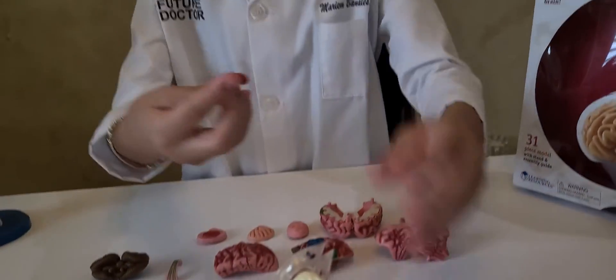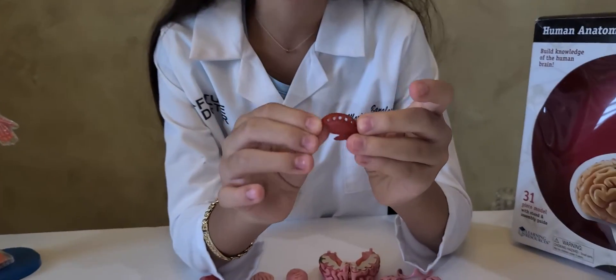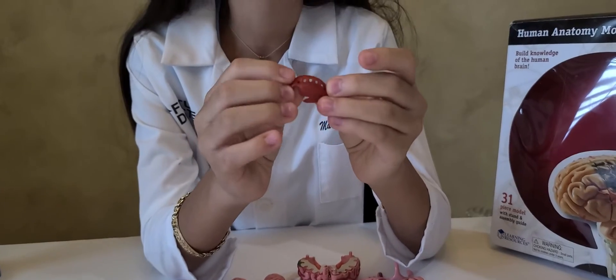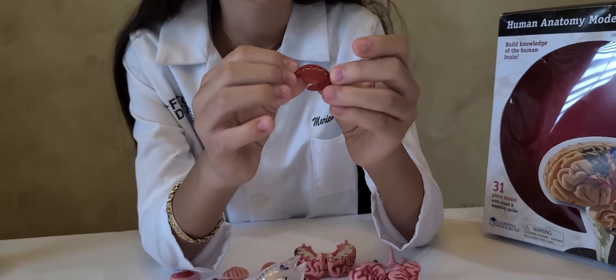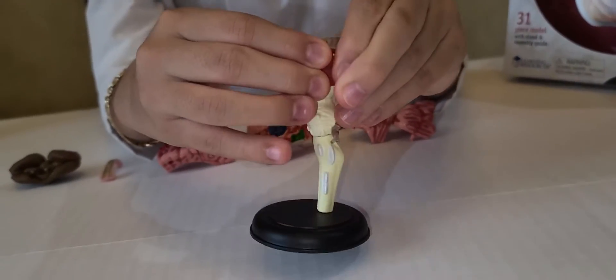The next piece is called the corpus striatum. The corpus striatum coordinates functions such as motor control, cognition, learning and emotions. And this piece I will place it right here.